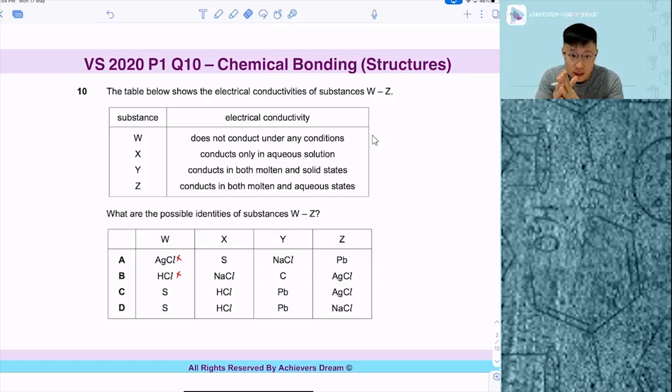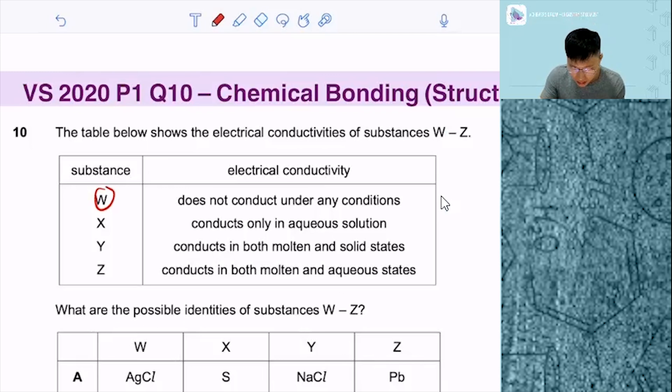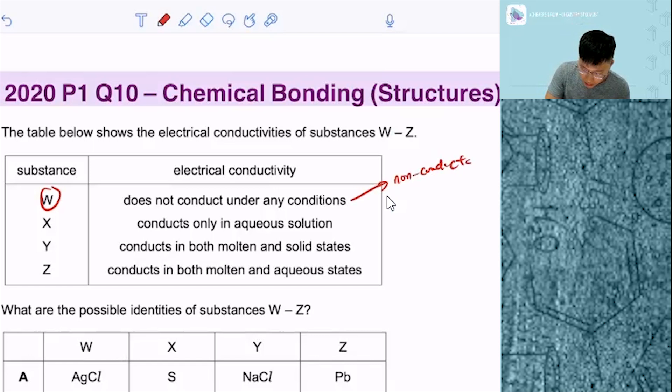So if I take a look at all your options, we start from one by one, we start from W. W does not conduct under any conditions. And since it doesn't conduct any conditions, most likely it's a non-conductor. What is a non-conductor? We usually go for the non-metals. Non-metals, they are non-conductor of electricity.